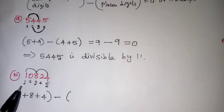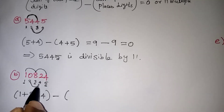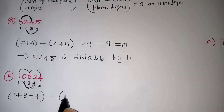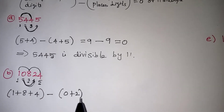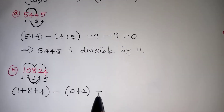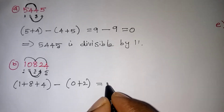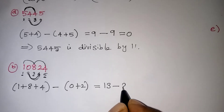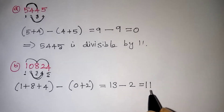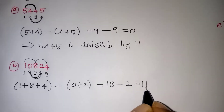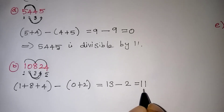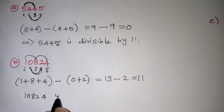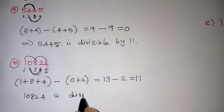Minus the even places. Even places are position 2 and 4, which give us 0 plus 2. So, 1 plus 8 is 9, and 9 plus 4 is 13. Minus 0 plus 2 is 2. So 13 minus 2 gives us 11. Since we are getting a multiple of 11, the number 10824 is divisible by 11.